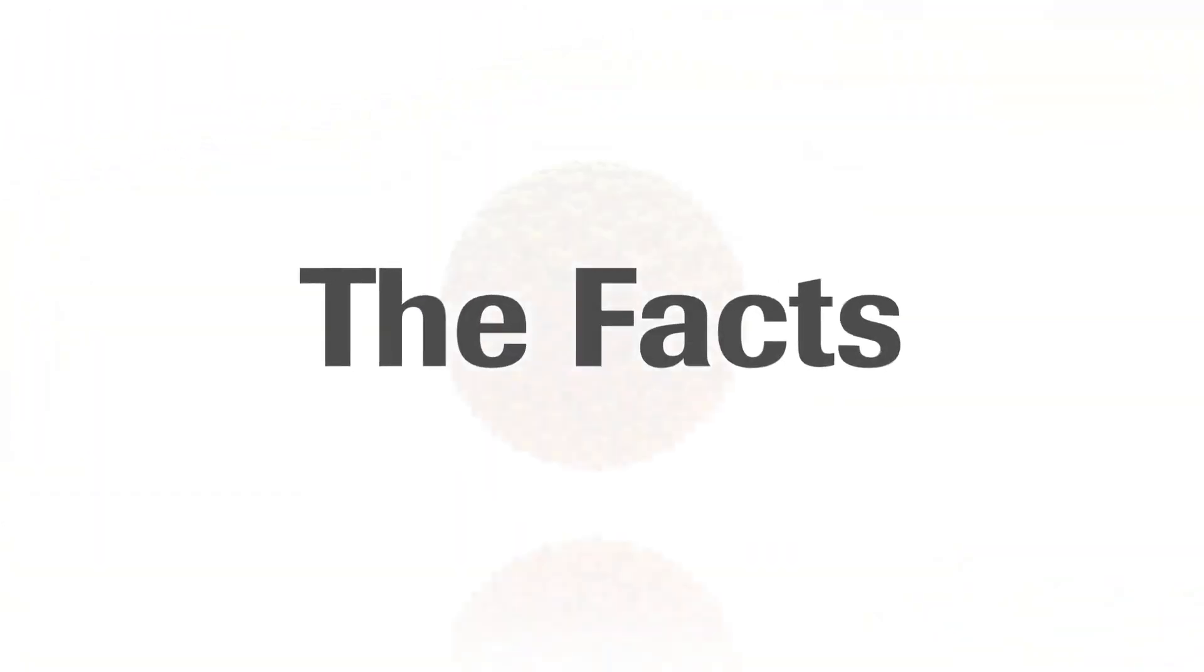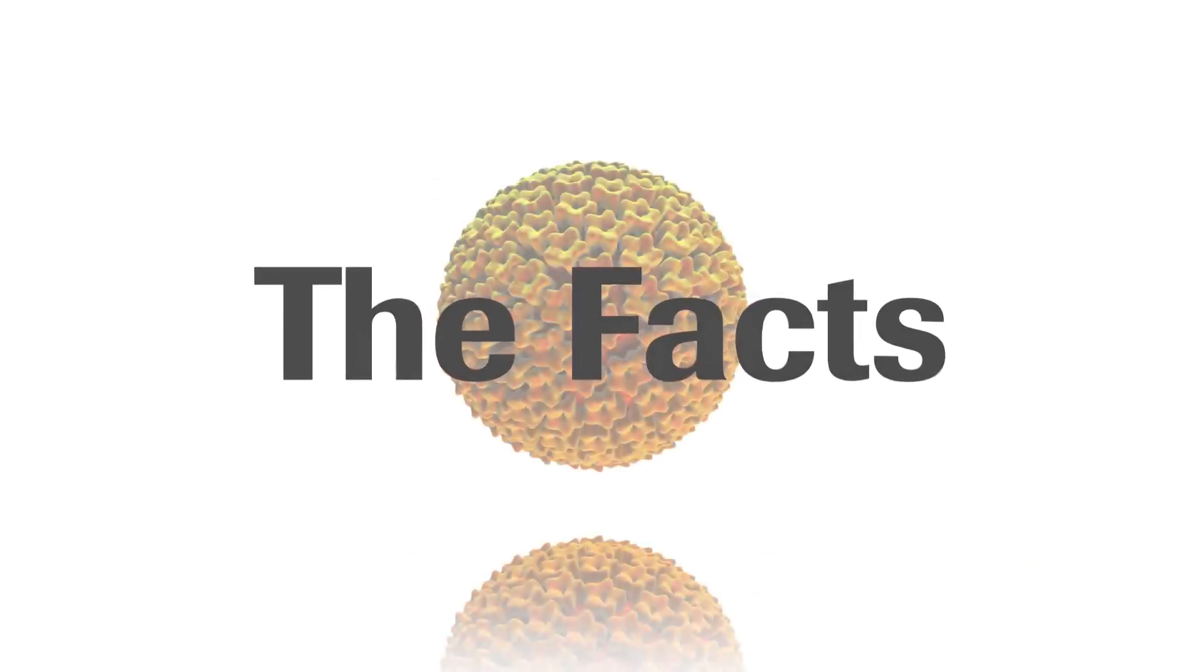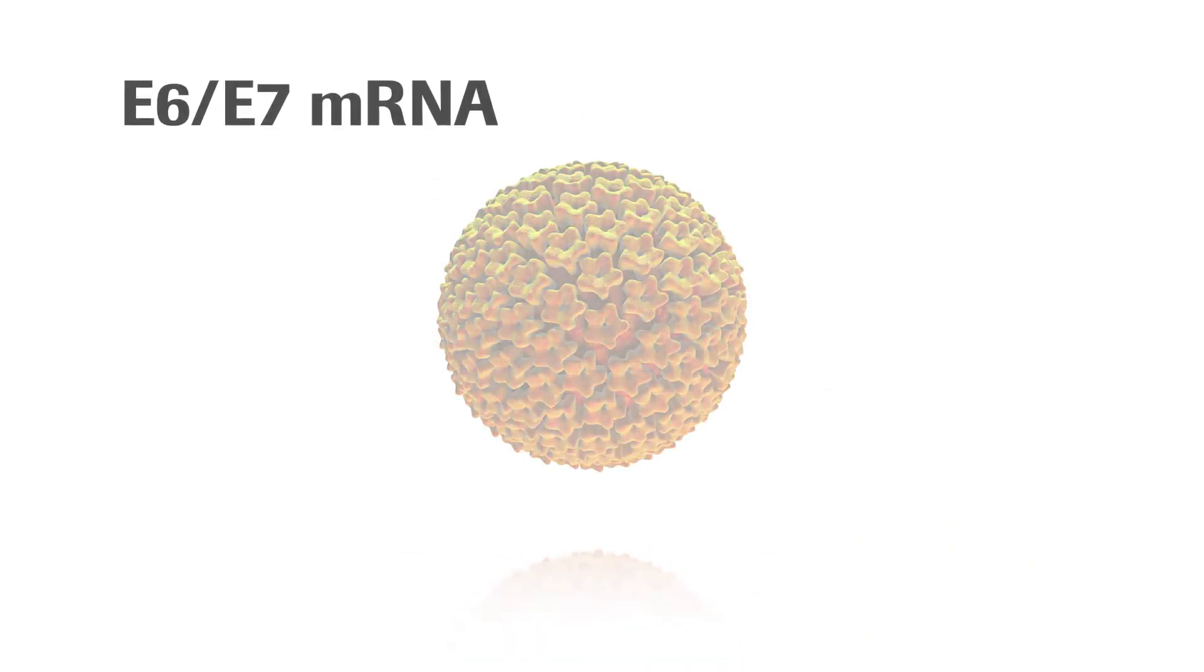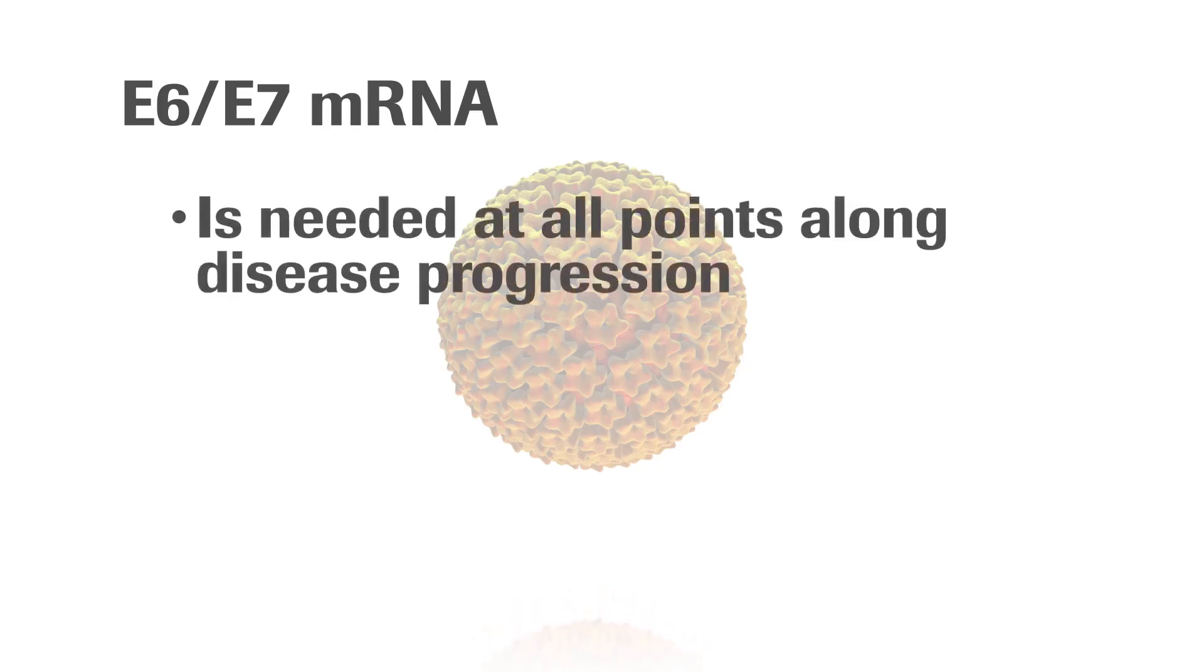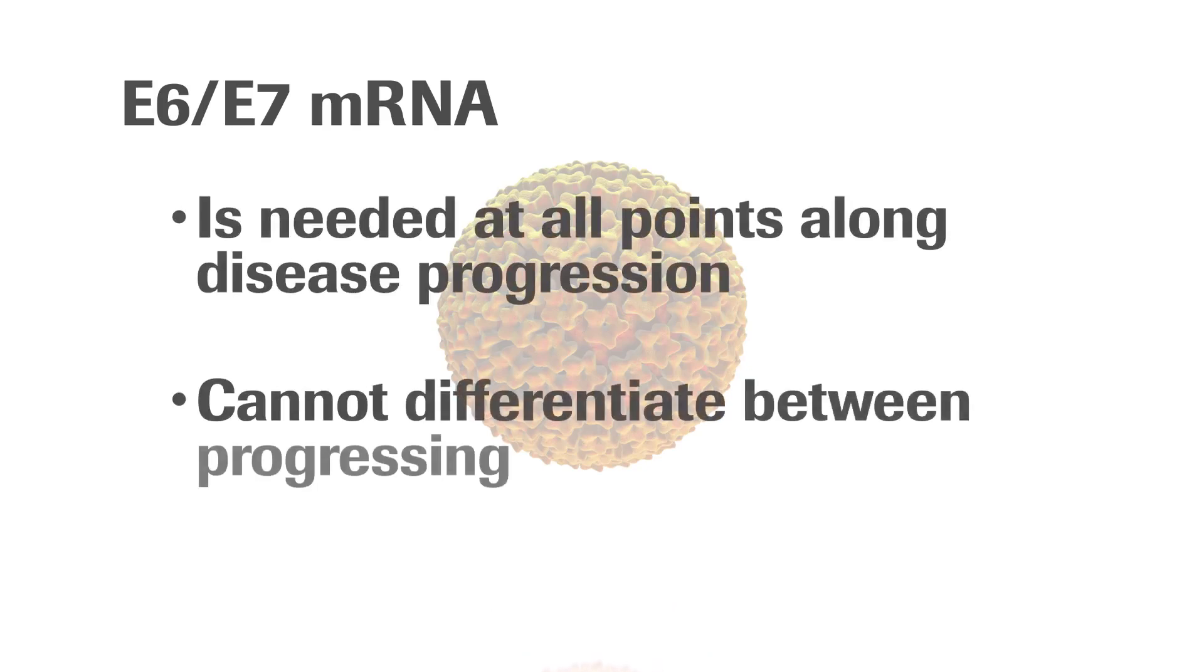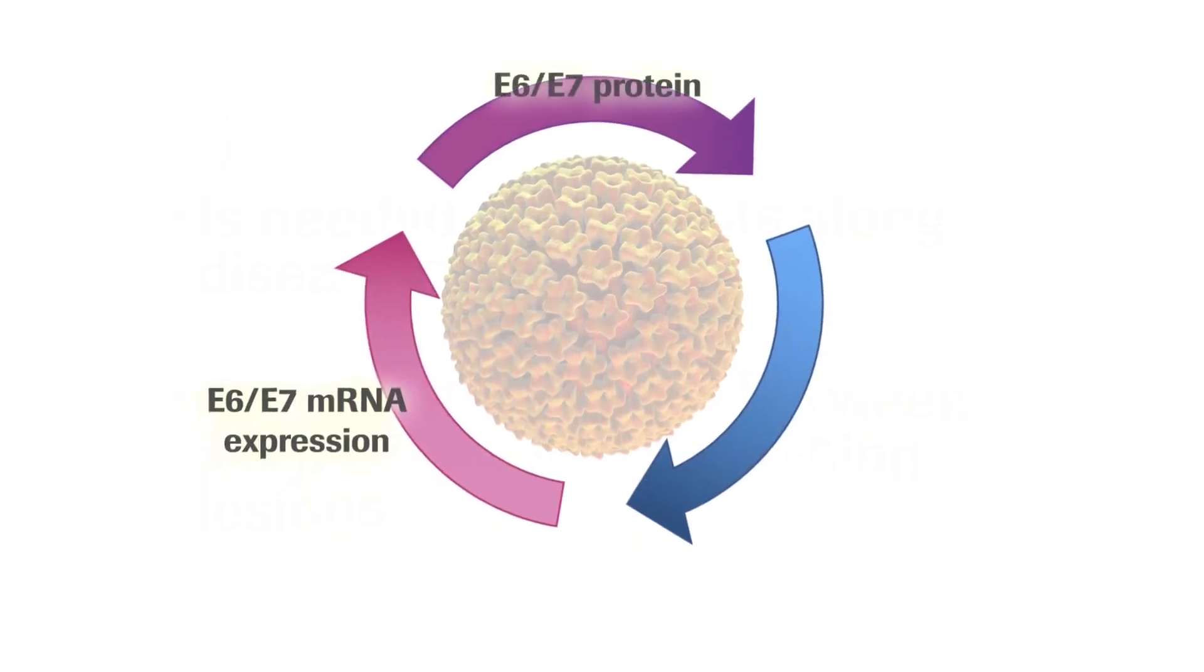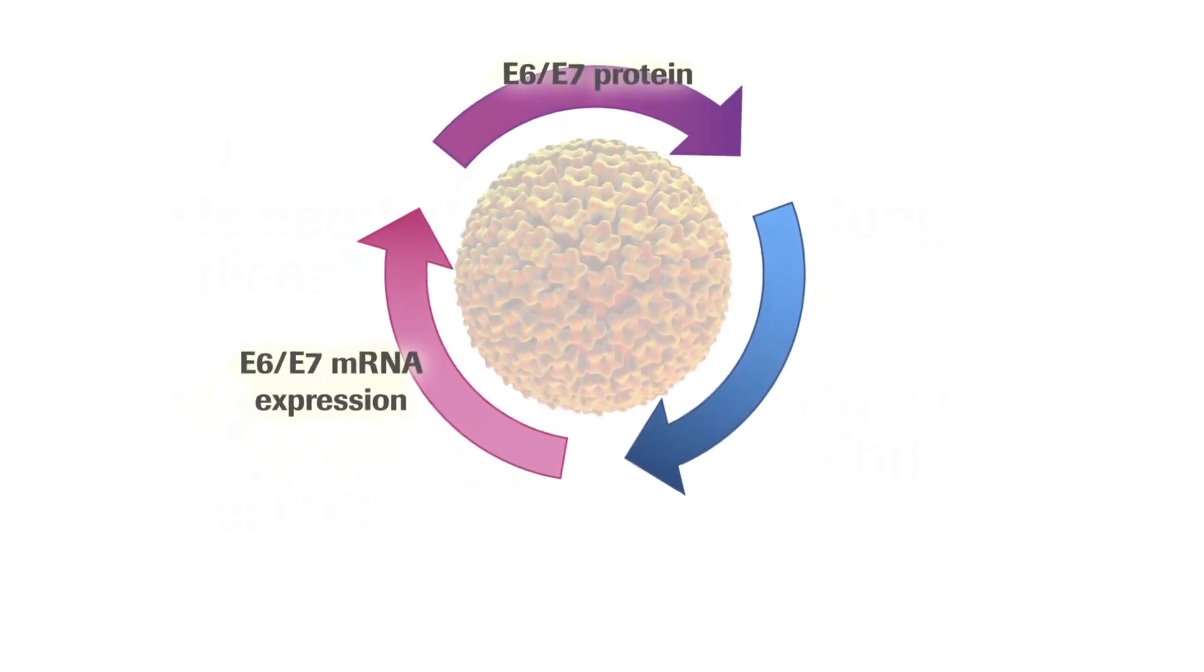Several important facts about HPV disease progression are worth considering. Because E6, E7 mRNA expression is needed at all points along disease progression, tests targeting these genes cannot differentiate between progressing and regressing lesions. E6, E7 mRNA expression produces E6, E7 proteins, driving dysregulated cell replication.